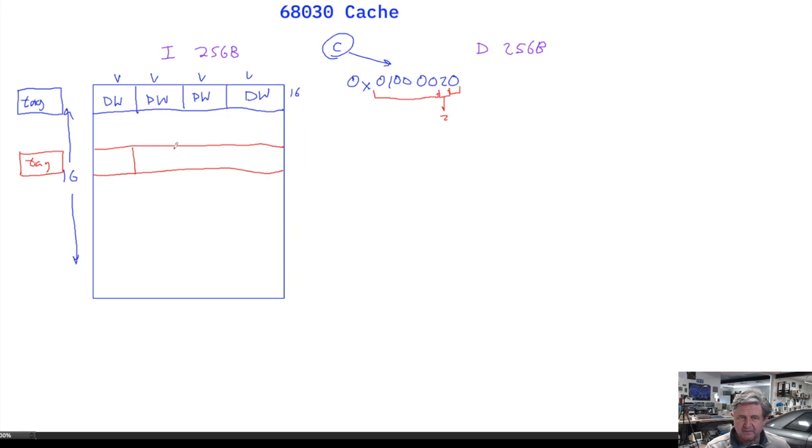Each cache line has these four D-words, and each D-word has a valid bit that goes with it. If we're looking for zero, it'll be in this first D-word. It will check to see if that valid bit is one. If the tag matches and the valid bit is one, then this value here is the value we want. It's in the cache, so it will get returned back up to the CPU, and no memory access will occur.